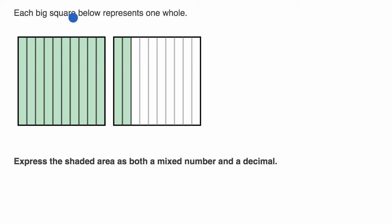We're told each big square below represents one whole. Express the shaded area as both a mixed number and a decimal. So pause this video and see if you can do that. What would this be as a mixed number? And then what would it be as a decimal?